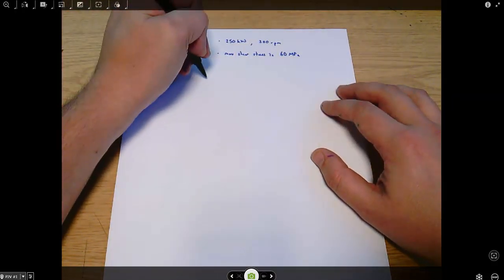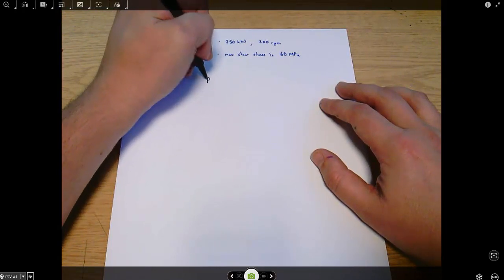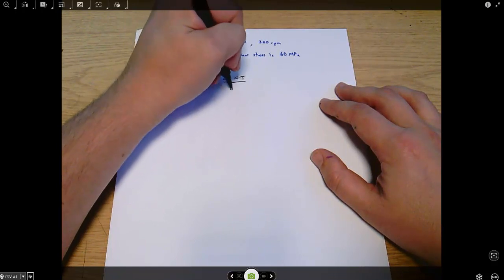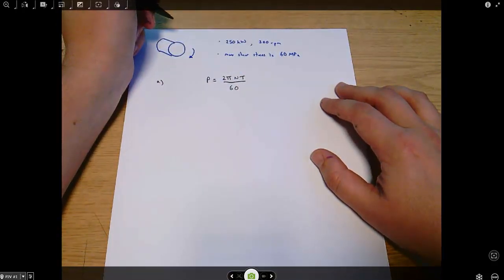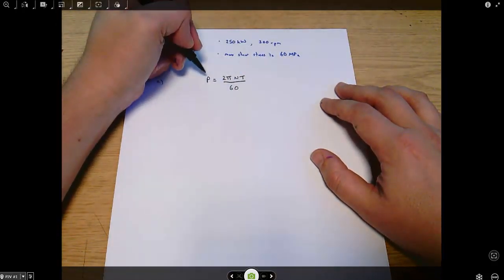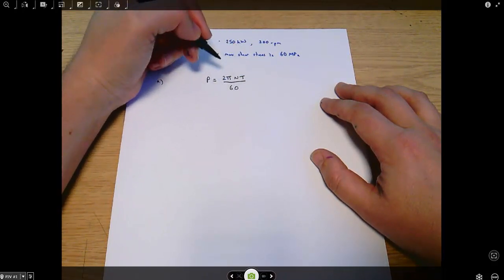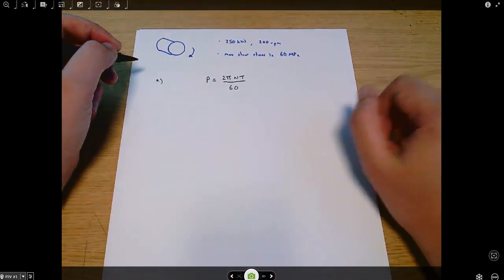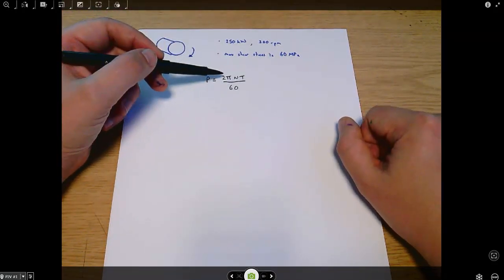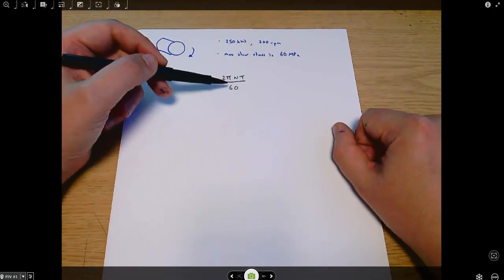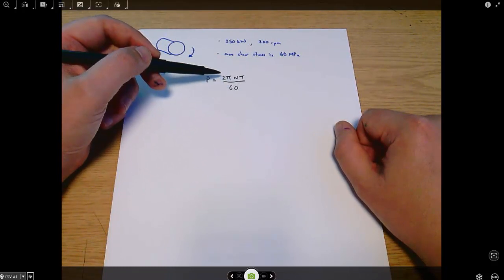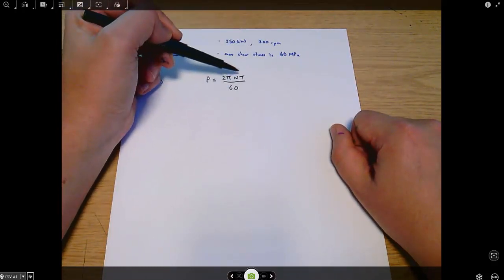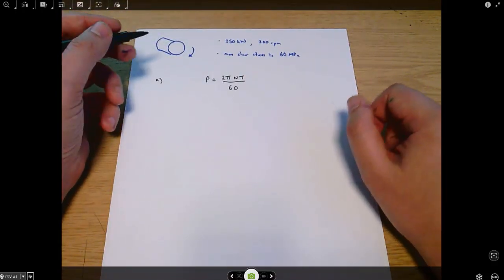I'm going to use the equation P equals 2 pi n T over 60. That's derived from power equals torque times omega, the rotational velocity, and 2 pi over 60 converts from radians per second into rpm. N is a number in rpm, T is torque.